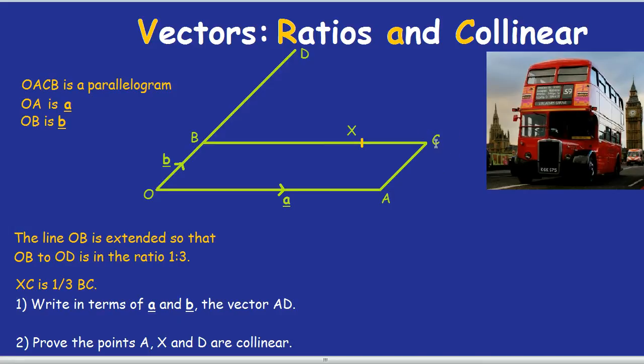Remember, a vector is just a direction, and if O to A is the direction a, B to C is the same direction and the same length, so that must also be a. If O to B is the direction b, and AC is parallel to it and the same length, AC must also be the vector b. That's why they said that.